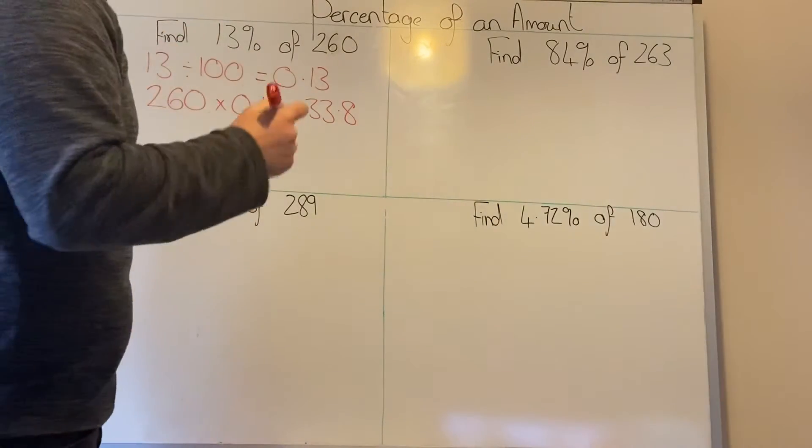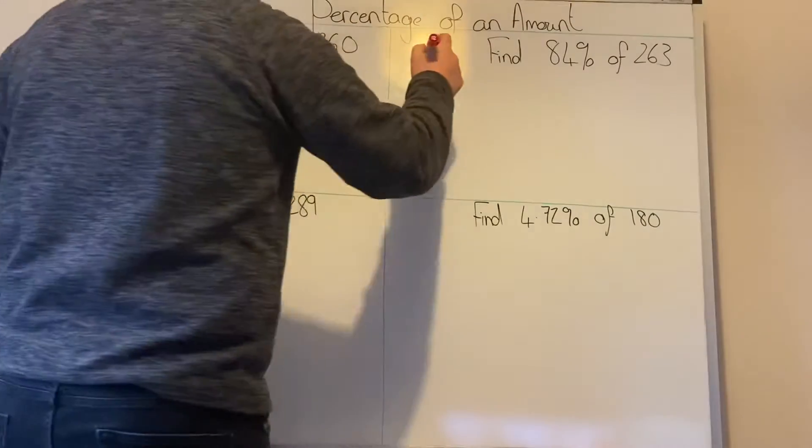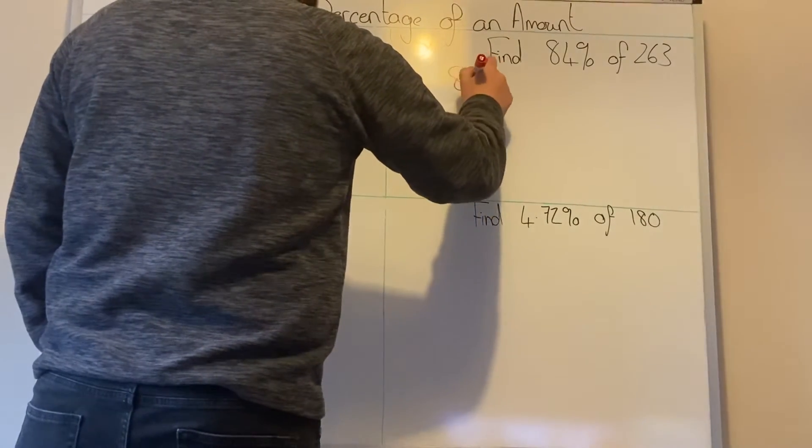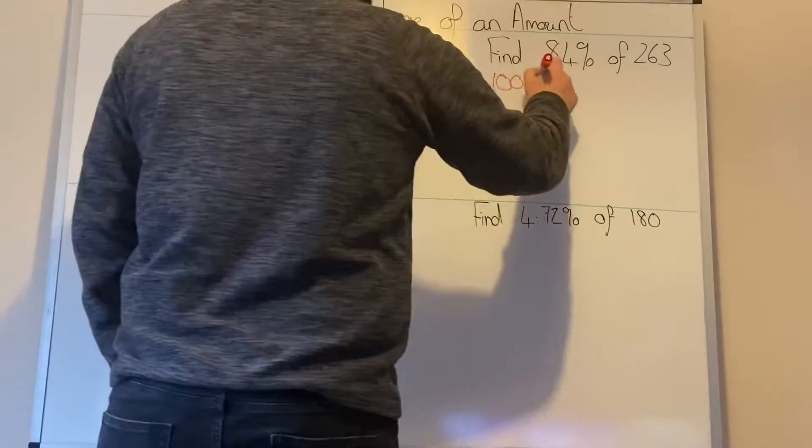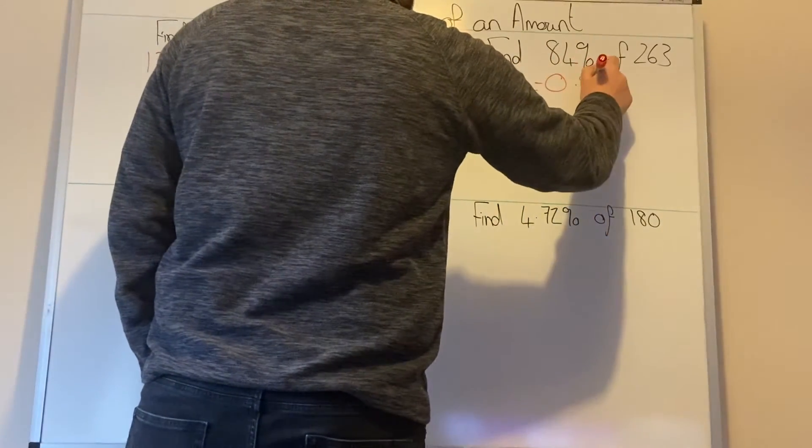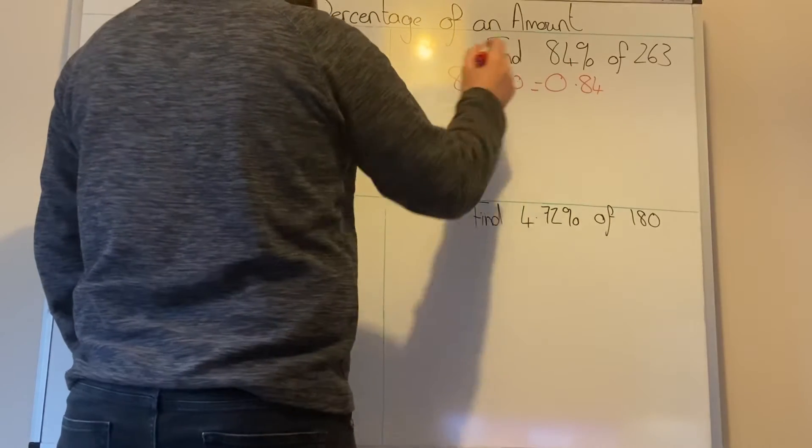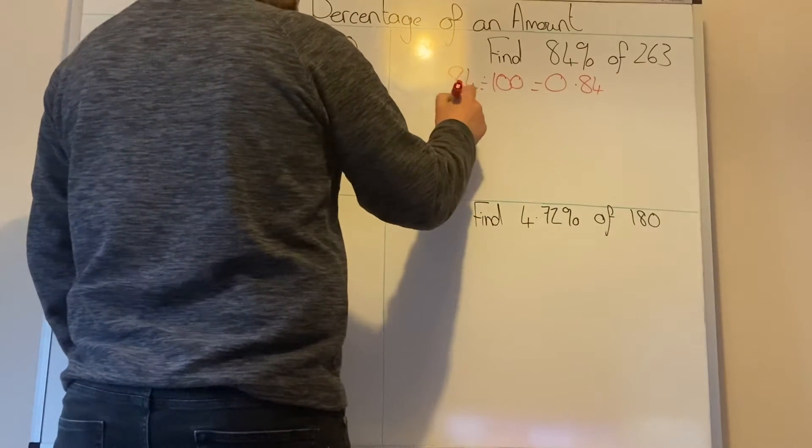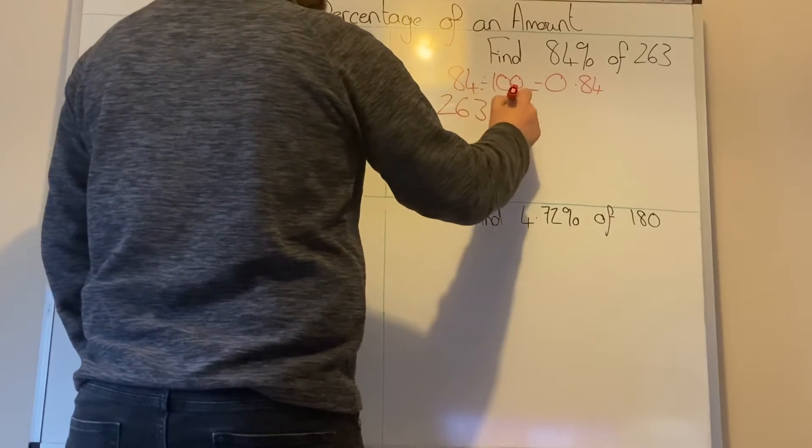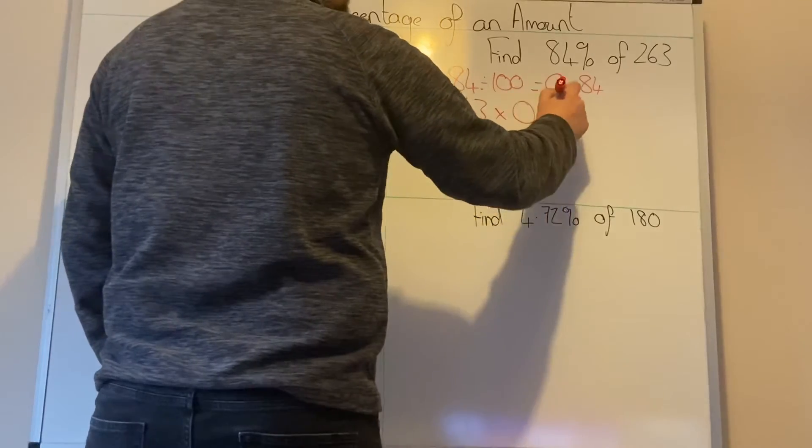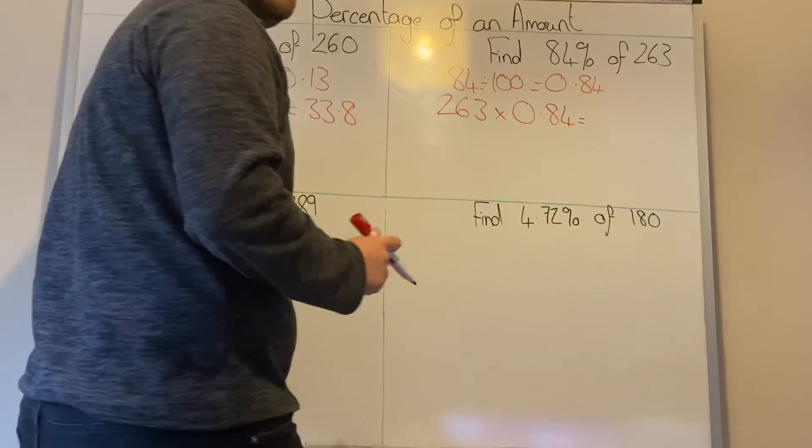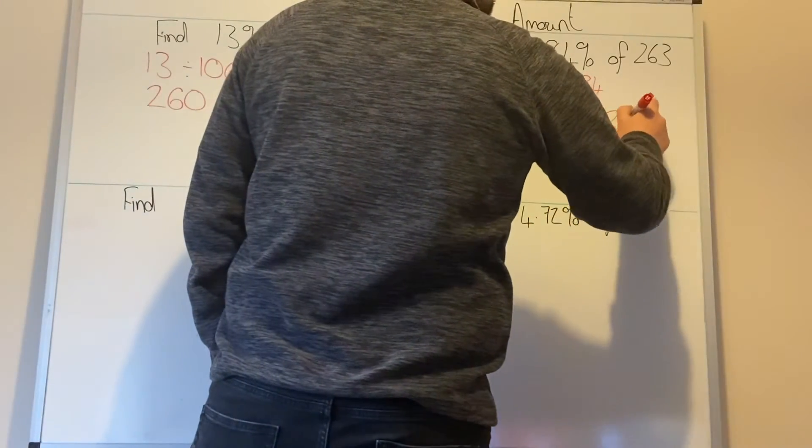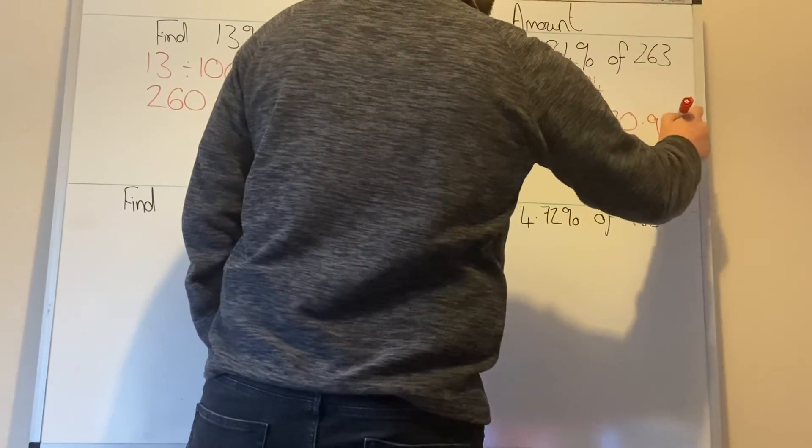Next one then. We're going to do the exact same thing again. So we're going to do 84 divided by 100, which equals 0.84, and that's your multiplier. So you're going to do 263 multiplied by 0.84 and your answer should be 220.92.